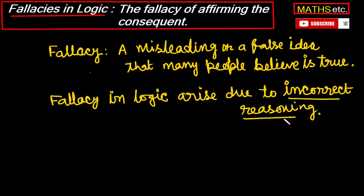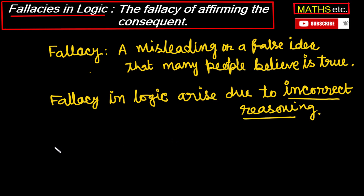What is reasoning? In logic, we have an argument, and we check its validity using rules of inference. So, incorrect reasoning means the rule of inference being used is misleading, and this is why we incorrectly think the conclusion is true. Let's understand this with an example.